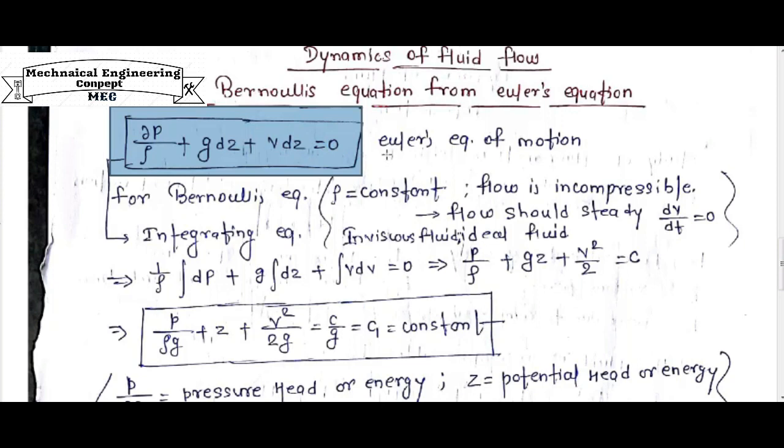For an element of fluid, we know that for Bernoulli's equation, density of a fluid is constant, rho is constant, because the flow is incompressible, and the flow should be steady, so dV by dt is also equal to 0.